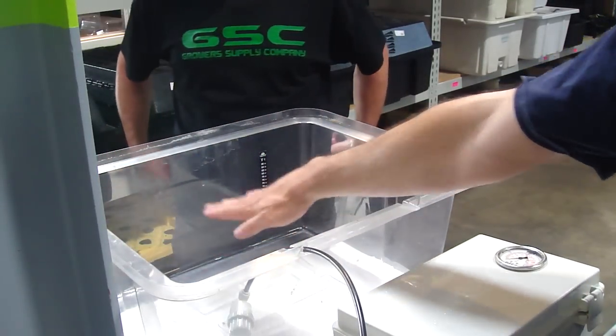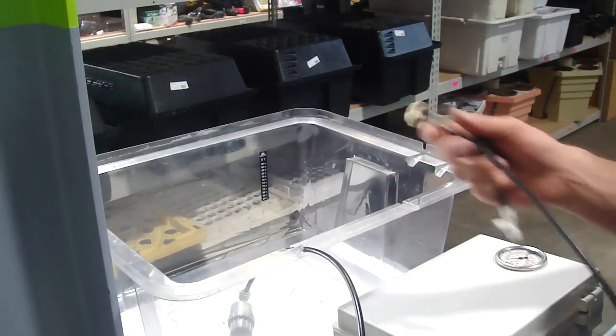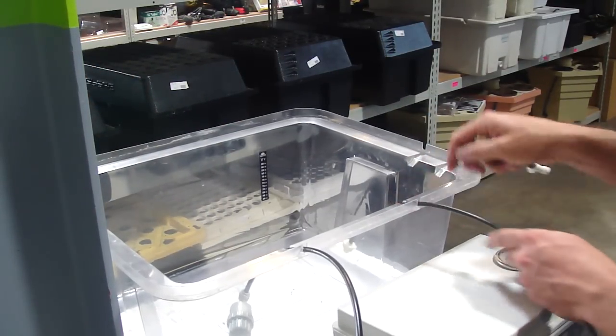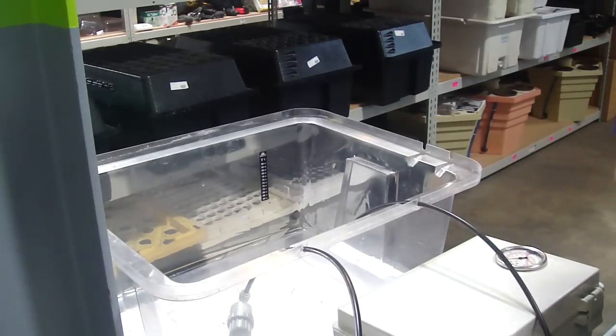You'd want to fill up approximately 5 to 6 inches of water in the Easy Cloner. And then we'll drop the sprayer in on the other side here. Put the lid back on.